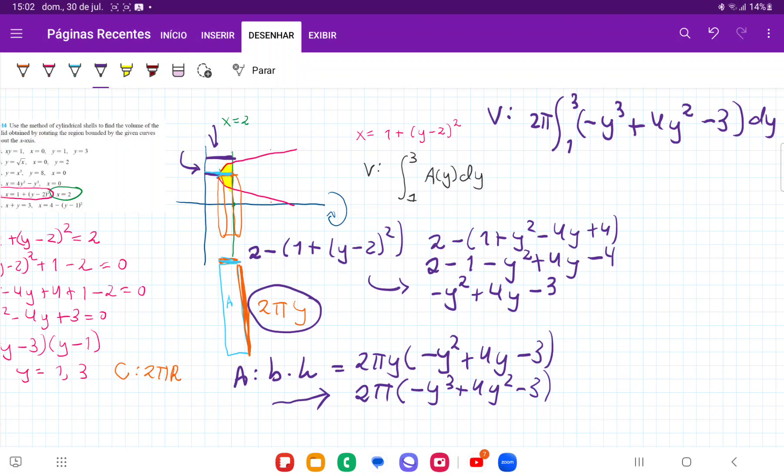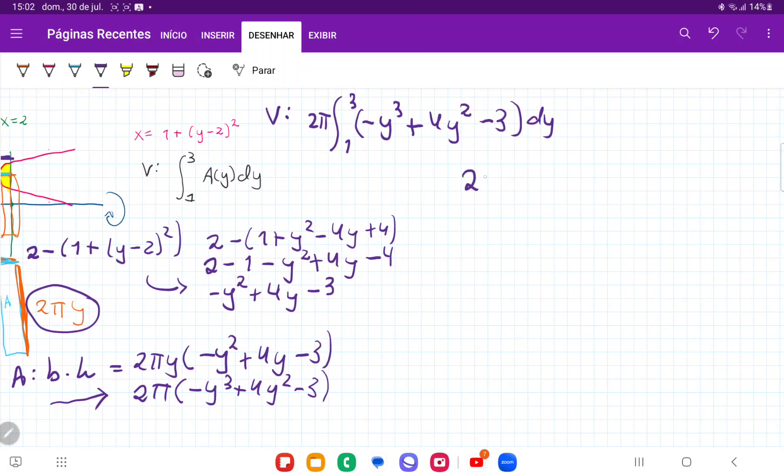So once I integrate it, I'm going to get 2π times -y⁴/4 + 4y³/3 - 3y²/2, and all of this evaluated from 1 to 3.